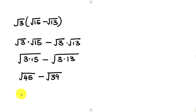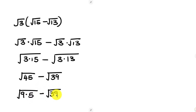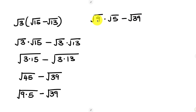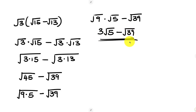Now we can further simplify √45. This 45 is the same as the square root of 9 times 5. We can leave √39 as is, minus the square root of 39. This expression becomes the square root of 9 times the square root of 5. The square root of 9 is 3, so this is 3 times the square root of 5, minus the square root of 39. And this becomes our final answer.